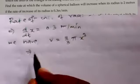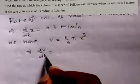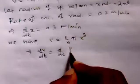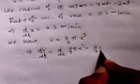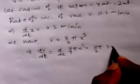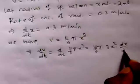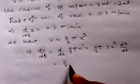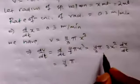Differentiating both sides with respect to t: dV/dt = d/dt of (4/3)π x³. So dV/dt = (4/3)π · 3x² · dx/dt. The 3s cancel, giving dV/dt = 4π x² · dx/dt.